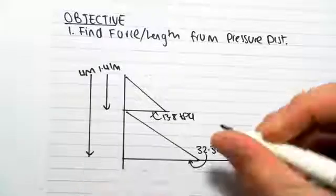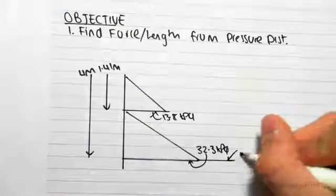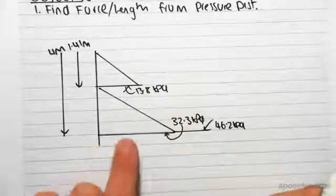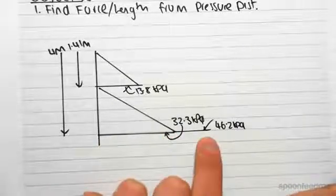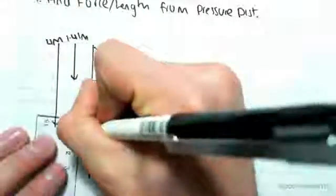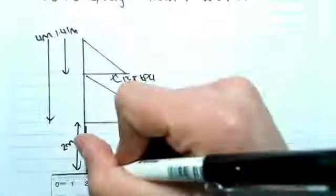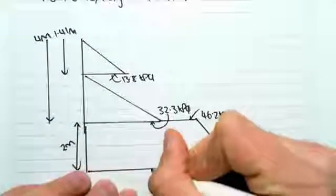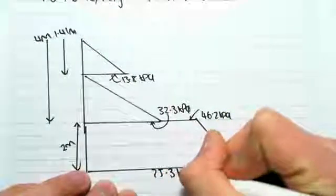this will jot out further and it will become 46.2 kPa. So 32.3 is this length there. 46.2 is this longer length here. And we know that this depth was 2 meters.